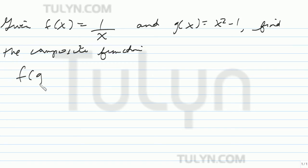Given f of x equals 1 divided by x, and g of x equals x squared minus 1, find the composite function f(g(2)).